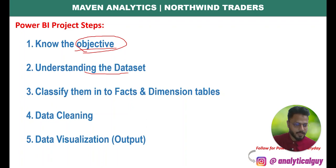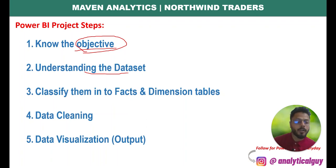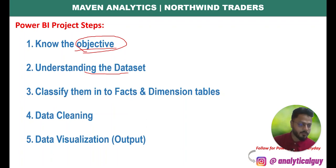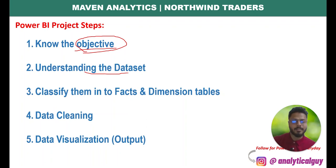Step two is understanding the dataset. There are various multiple tables coming from different data sources. You need to understand how you're connecting them — what are the relationships? Are they one-to-many, many-to-many, many-to-one, one-to-one? Is it a cross filter? What is the cardinality? We have to understand the data types of each column, whether we need to create additional columns, and whether we need to merge or join tables.